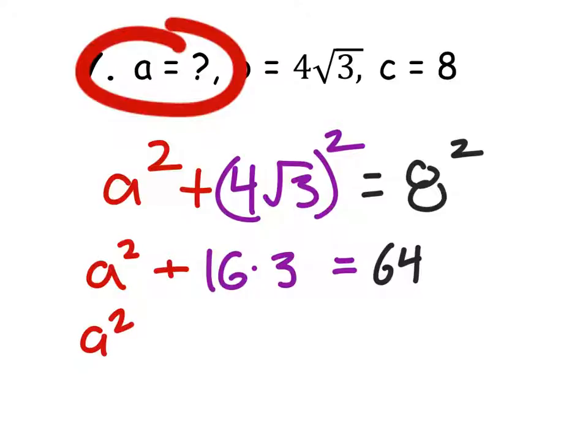So A squared plus three times sixteen is forty-eight. That equals sixty-four.